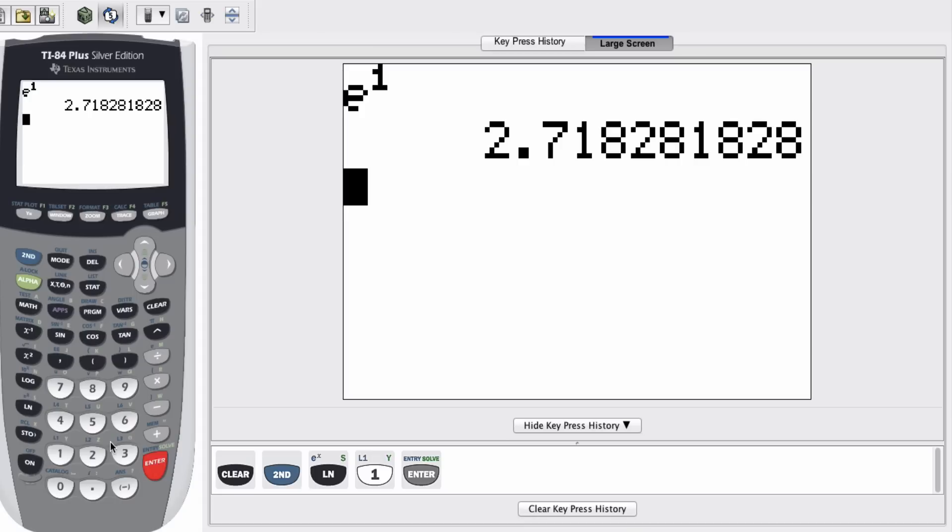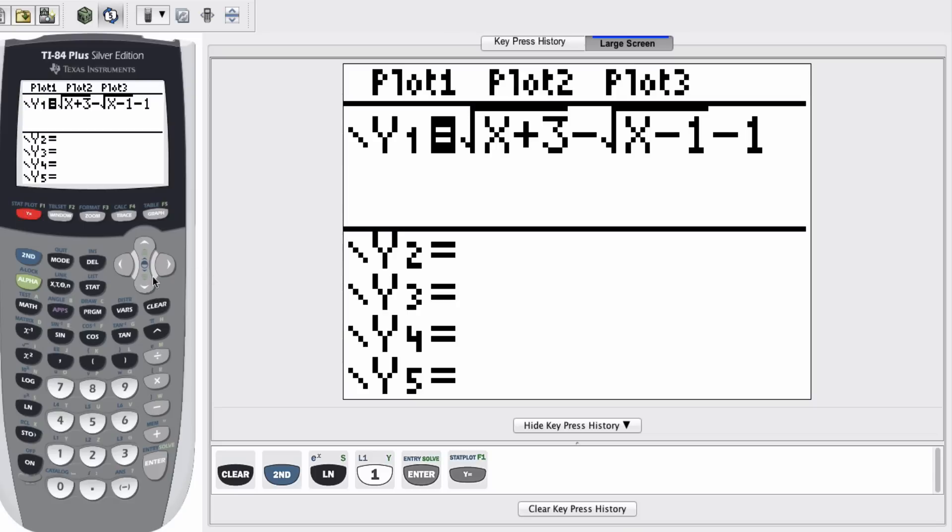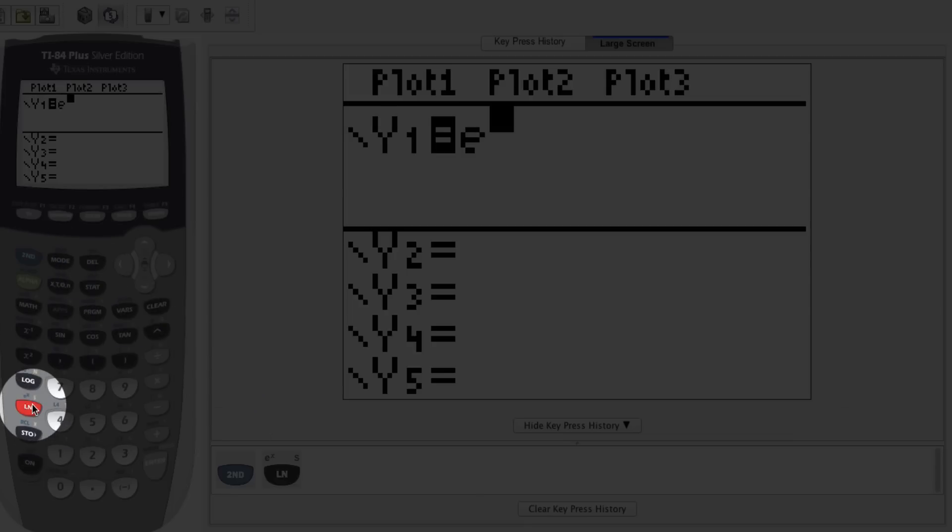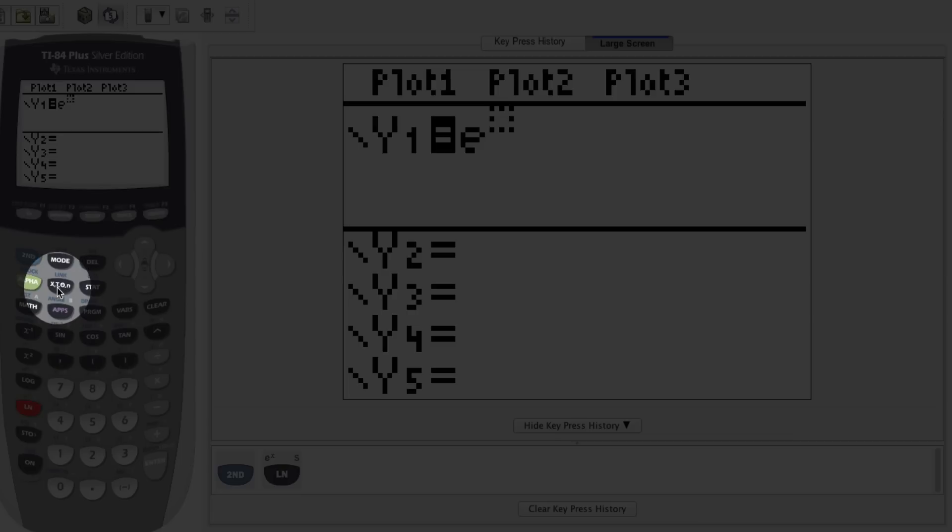The next thing that I want to show you guys is how we would graph this. So I'm going to press Y equals. And if you have anything in there, go ahead and clear it out. And I'm going to graph E to the X. So I'm pressing second LN. And this gives me E to a power. I want to use my X, T, theta, and button as my variable.